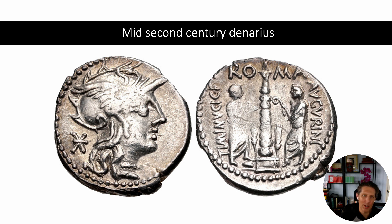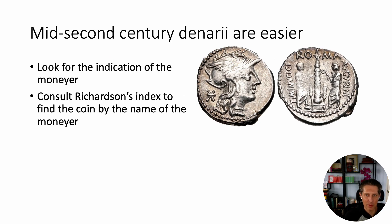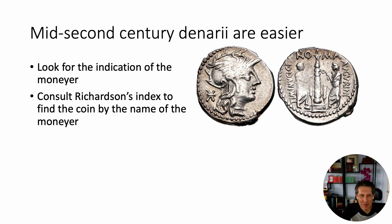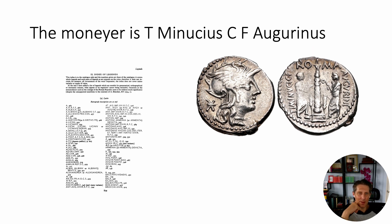It's really important to understand that Roma is not the moneyer — we're talking about a Roman coin, and Roma is the marker that this is a Roman coin. So when we look this up, we look for the indication of the moneyer. We know Roma is not part of it, so we've got Tiberius Minucius C.F. Augurinus. When I'm trying to identify coins, I usually just use a piece of paper and write it out, because it's important to keep your information straight.